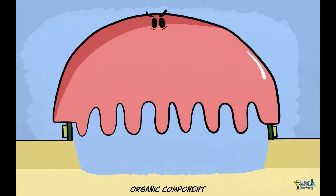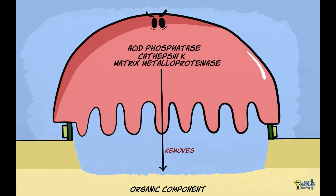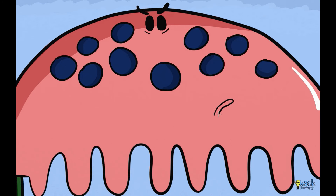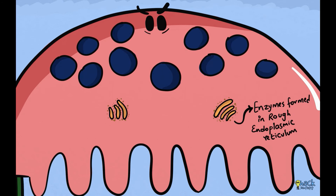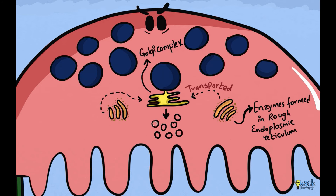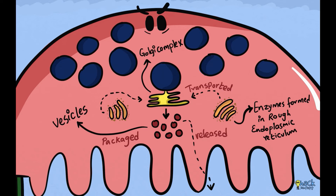The organic matrix of the bone is removed by the action of several enzymes like acid phosphatase, cathepsin-K, and matrix metalloproteinase. These enzymes are formed in the rough endoplasmic reticulum, transported to the Golgi complex where they are packaged into vesicles, and are released via the ruffled border into the resorption compartment.